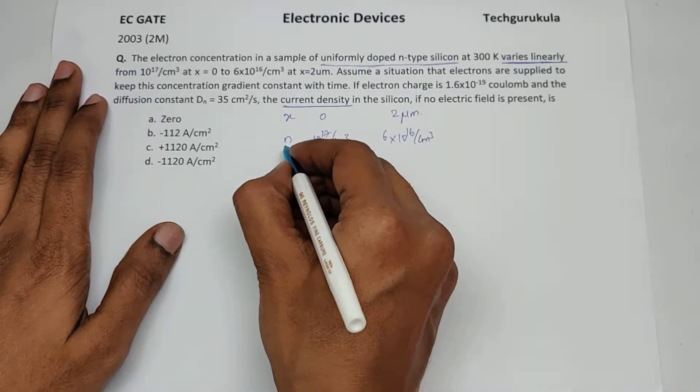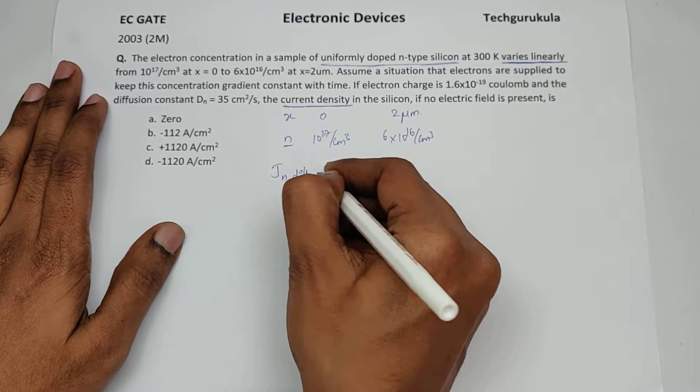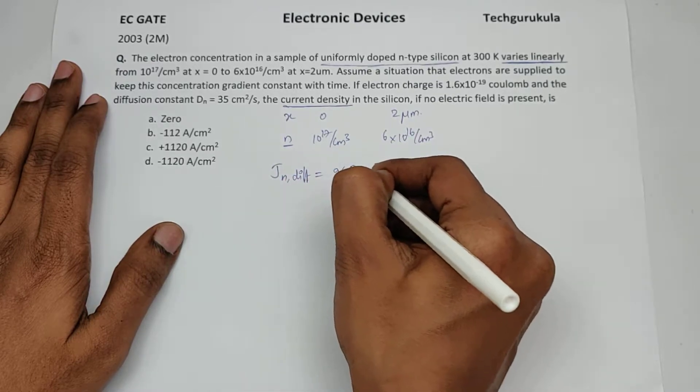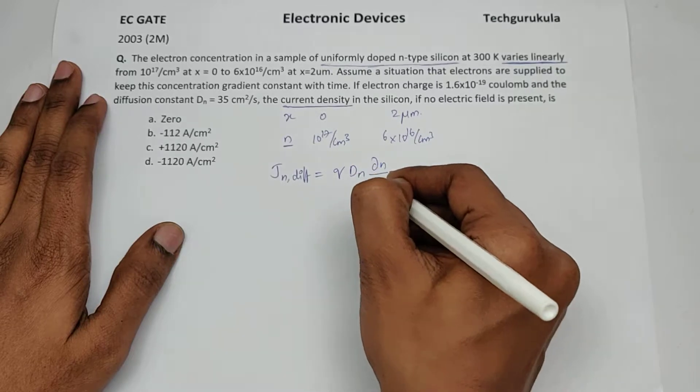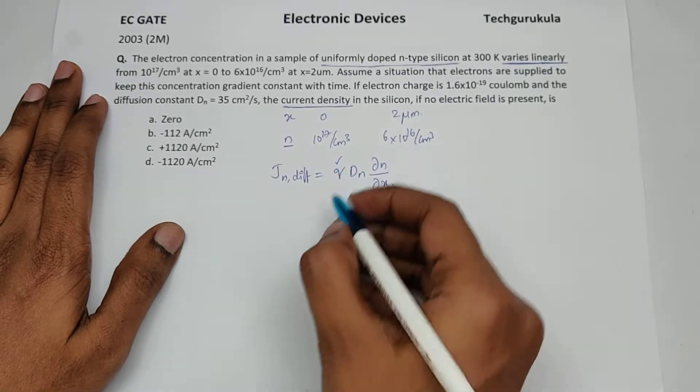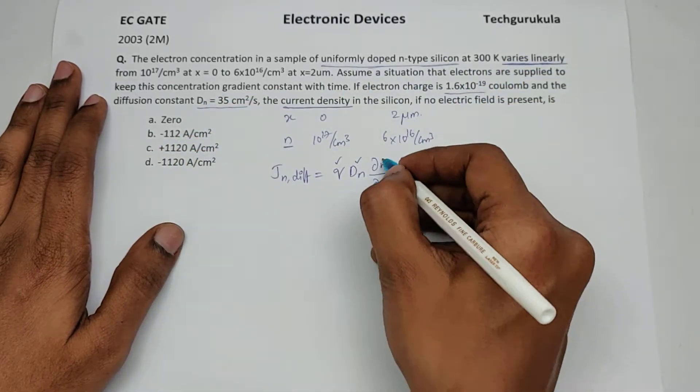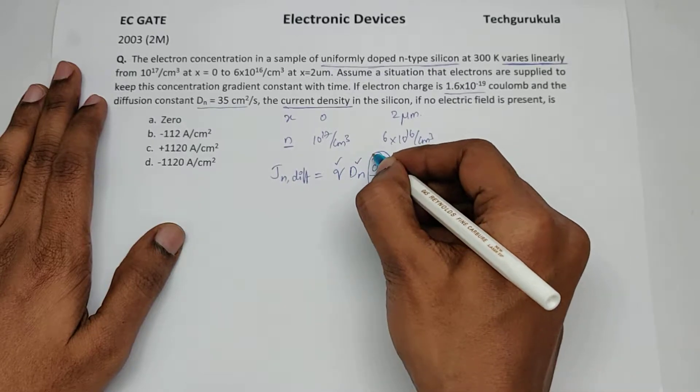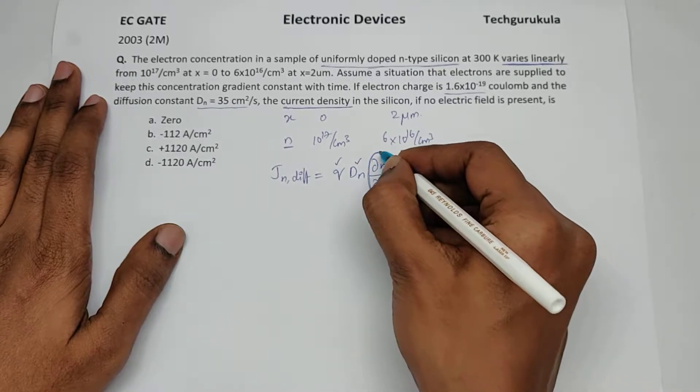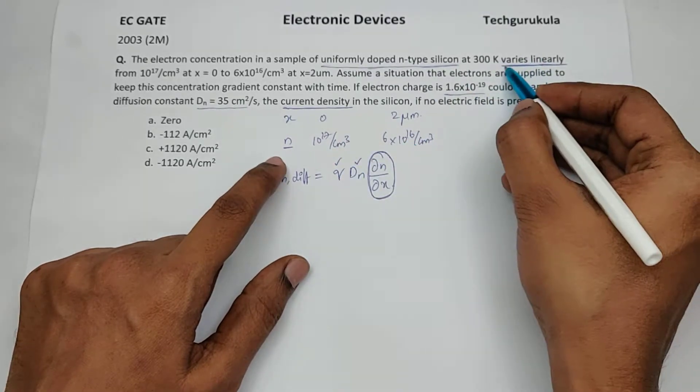Diffusion current density for electrons is given by J_n diffusion equals q times D_n times del n over del x. Out of this, q is given, D_n is given. Del n by del x is something that we don't know directly. But instead they told that carrier concentration is varying linearly.